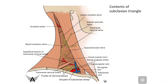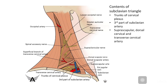The contents of the subclavian triangle include the trunks of the brachial plexus as the nervous structures. The arterial structures are the third part of the subclavian artery, plus three smaller arteries: the suprascapular, dorsal cervical, and transverse cervical arteries. The veins present are the subclavian vein and the external jugular vein.